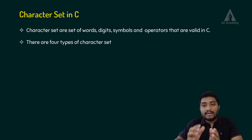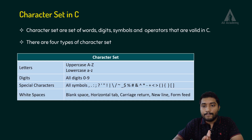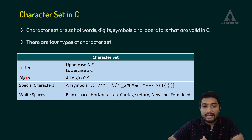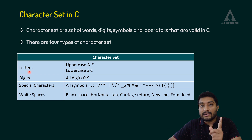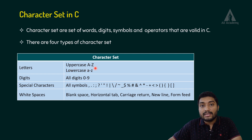There are different types of character sets. Actually, there are four types. Here you can see we have letters as one of the character sets. In C, all the uppercase letters from A to Z are supported. Also, lowercase letters, alphabets from A to Z are supported.